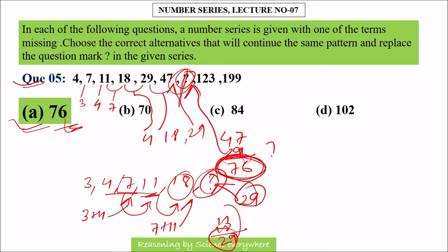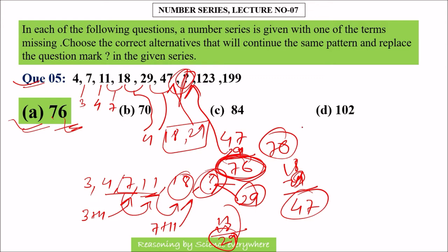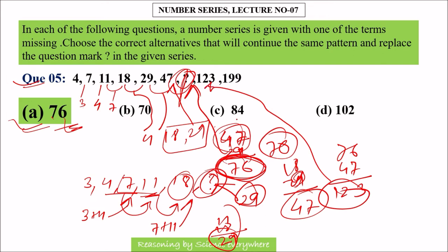You can cross-check this pattern: according to the rule, 18 plus 29 should give 47, which it does. And 29 plus 47 gives 76, which confirms 76 is the correct answer. The logic applies consistently throughout the series.